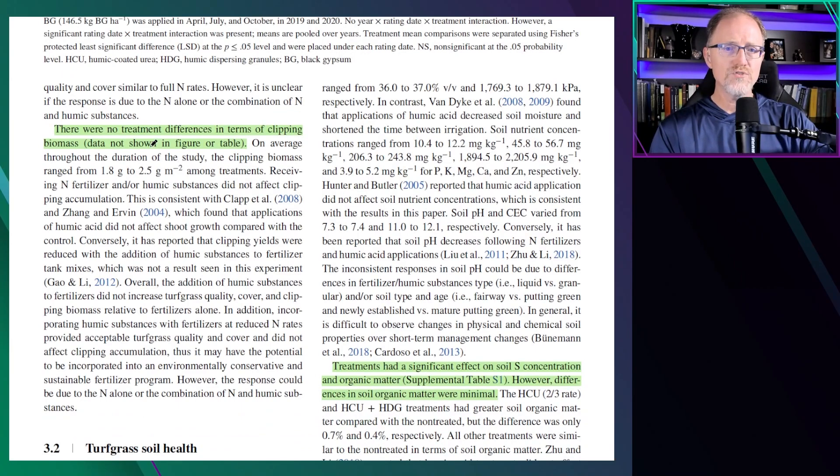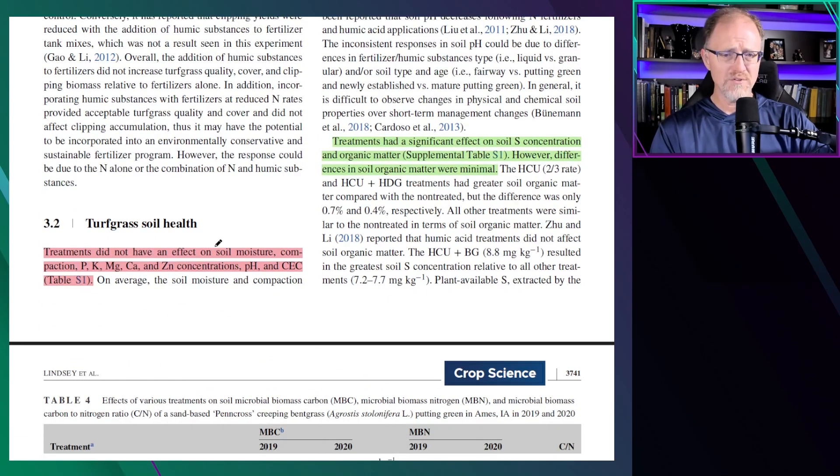There were no treatment differences in terms of clipping biomass, and the data was not shown for that. In a supplementary table that I won't show on this brief summary video, they show that treatments did not have an effect on soil moisture, compaction, phosphorus, potassium, magnesium, calcium, zinc concentrations, or pH and CEC.